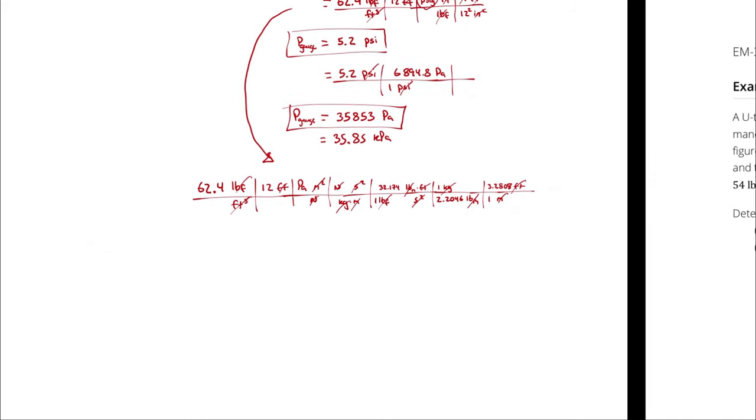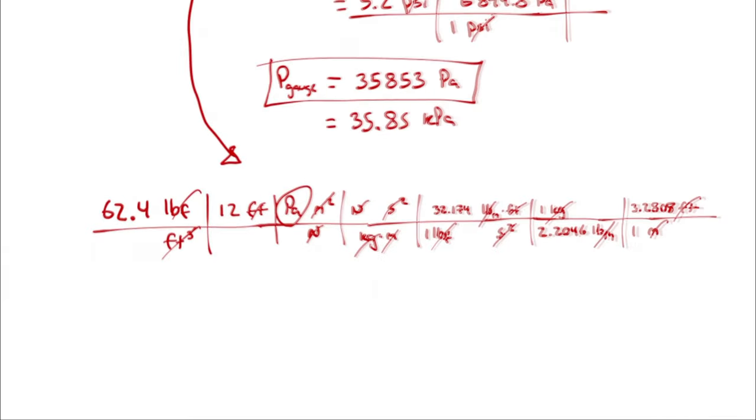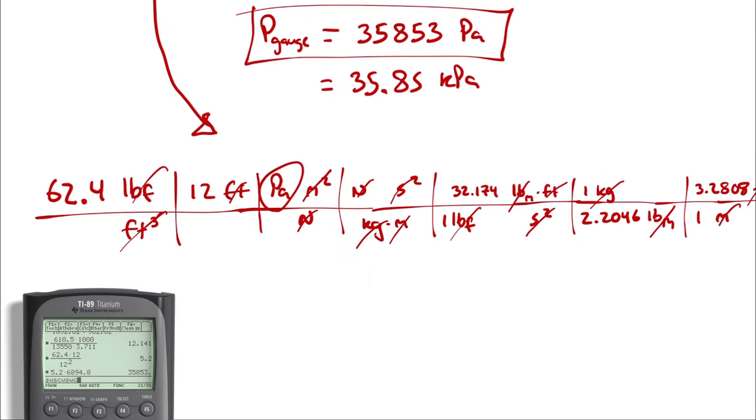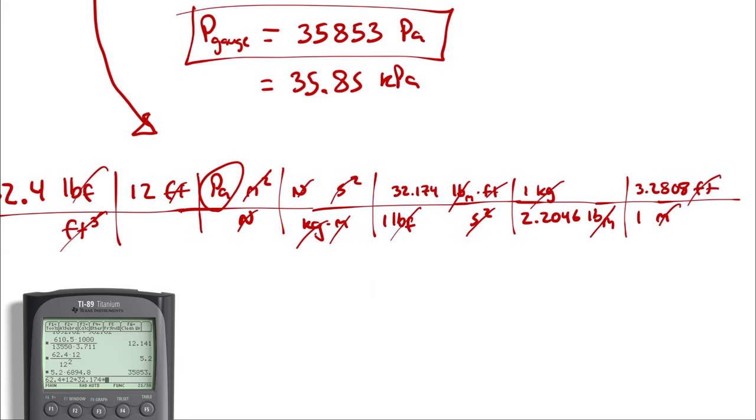Therefore, the only thing left is Pascals. I want 62.4, multiplied by 12, multiplied by 32.174, multiplied by 3.2808, divided by 2.2046.